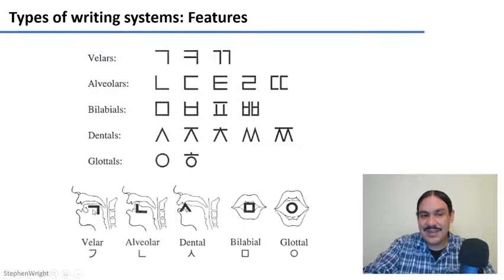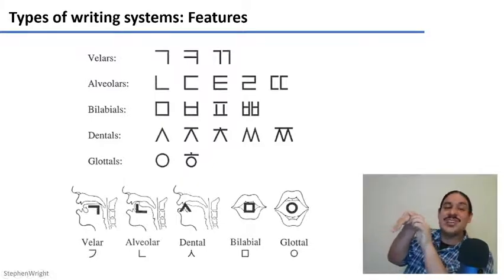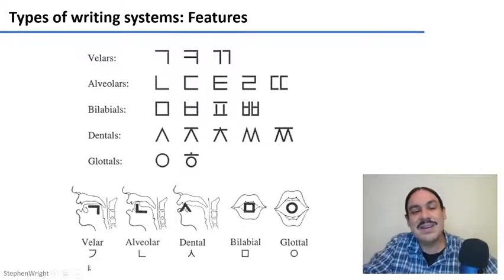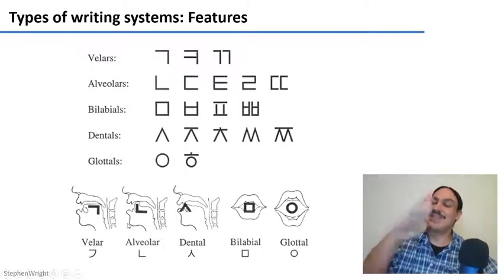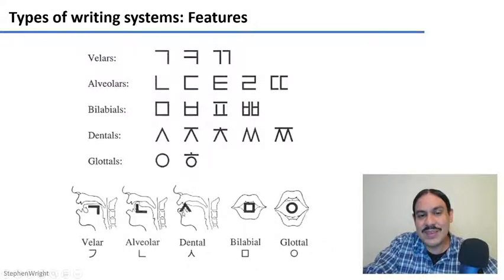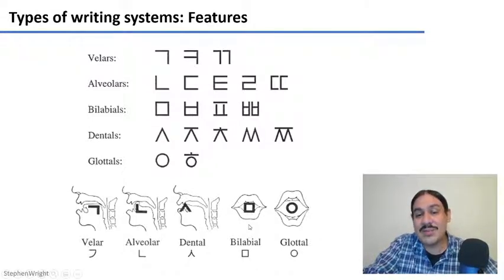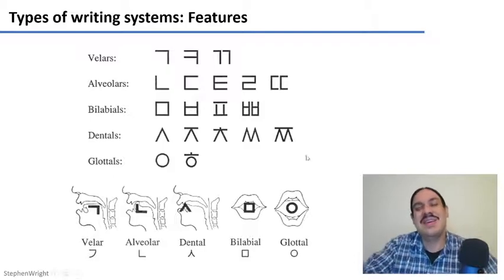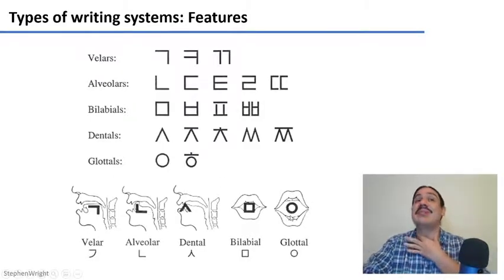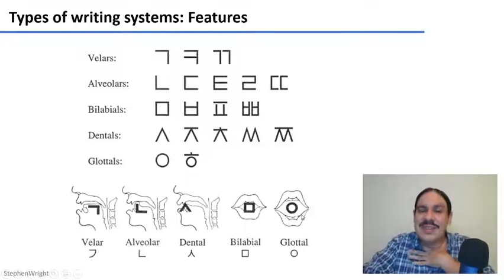For example, the first symbol is a 'k', representing the corner your tongue makes when it touches the velum at the back. The 'n' symbol represents the alveolar 'n', because your tongue goes to the alveolar ridge and is raised. The triangle is for 's' and symbolizes the dental form — like your tongue going up to your teeth. The square is for the bilabial 'm', representing the shape of your lips as they are released. Another symbol is for glottal sounds like 'h', resembling the back and tube of your throat. The creator was inspired by the articulatory features of each sound, which is very unique.